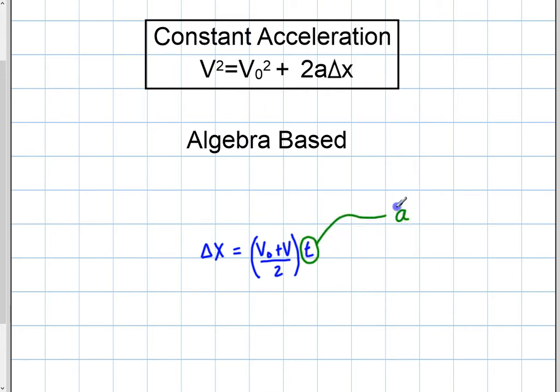Average acceleration is going to be final velocity minus initial velocity over final time minus initial time. And from that, I'm going to basically tell you that that initial time is going to go away to zero.